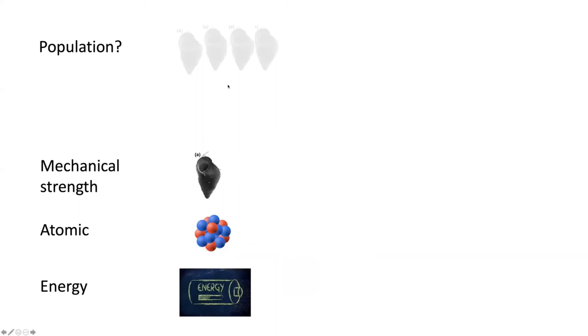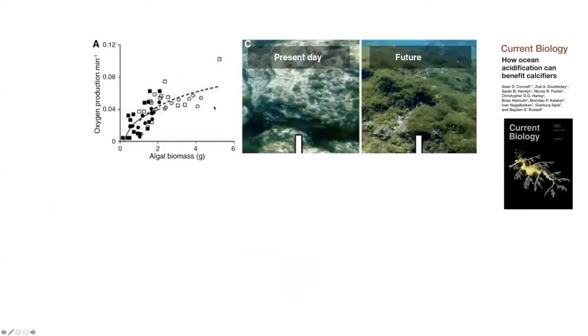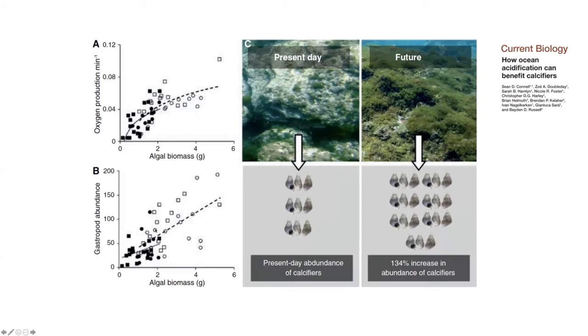So what does this mean for the next level up, the population level? Well, the key thing is energy again. So we go back for a dive at the vents, and this is what we see under those future conditions. We have these thicket mats of turf-forming algae that Ben was talking about, and they're highly productive. So with increase in biomass, we get increase in oxygen production. And that's associated with an increase in the abundance of these snails. So that's quite opposite to what we might anticipate, where this is acting as a resource. CO2 is propagating up through the food chain.